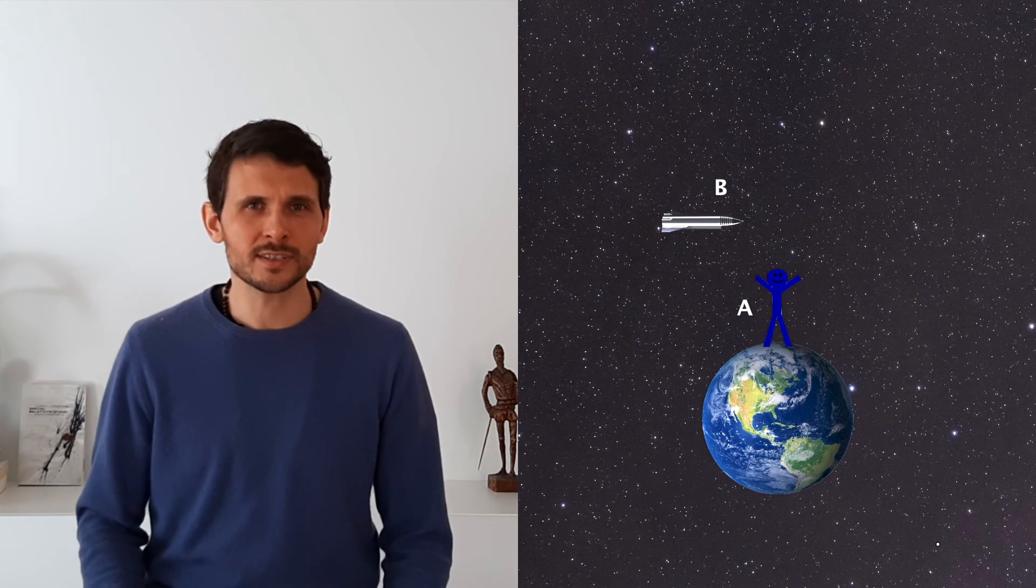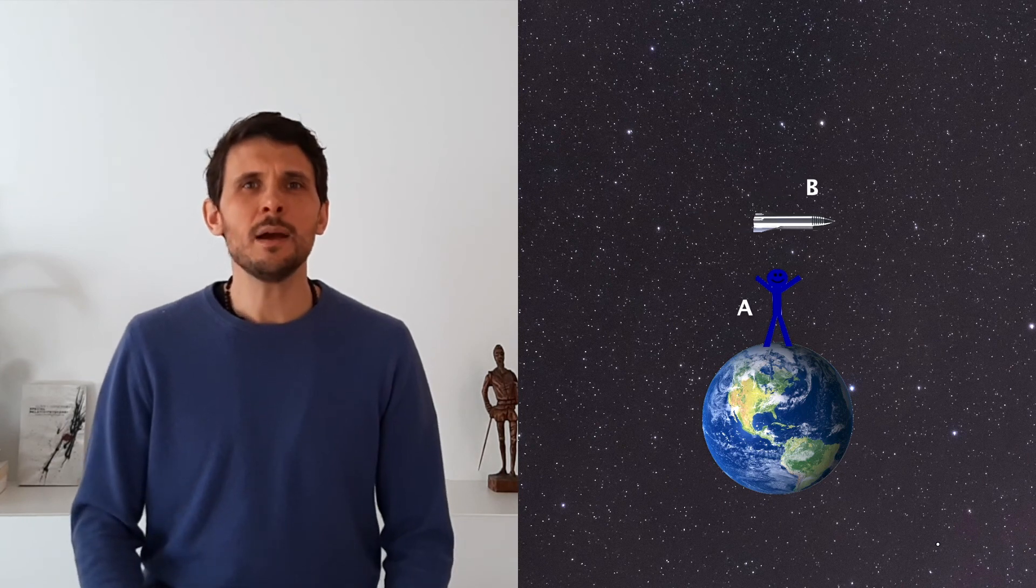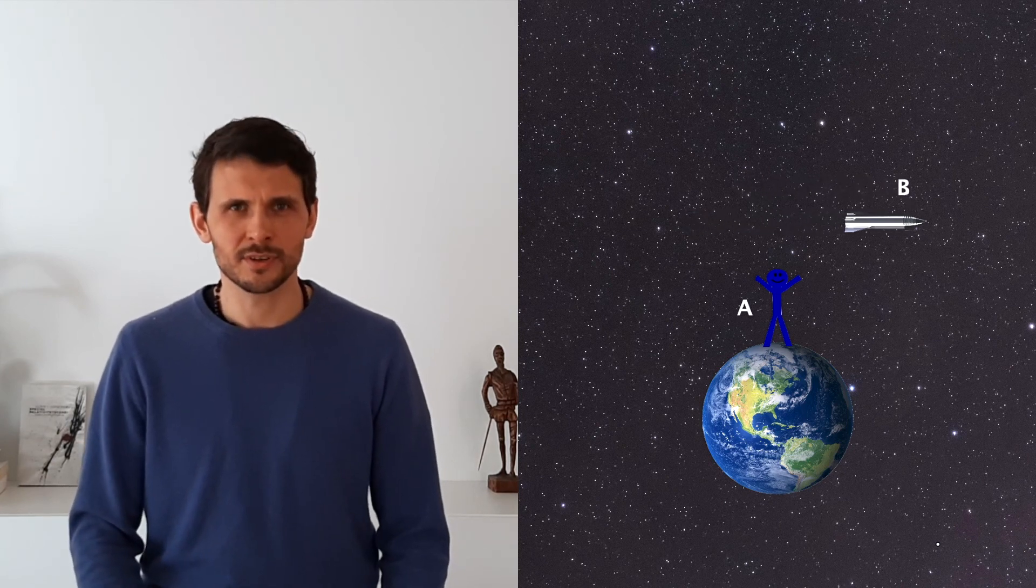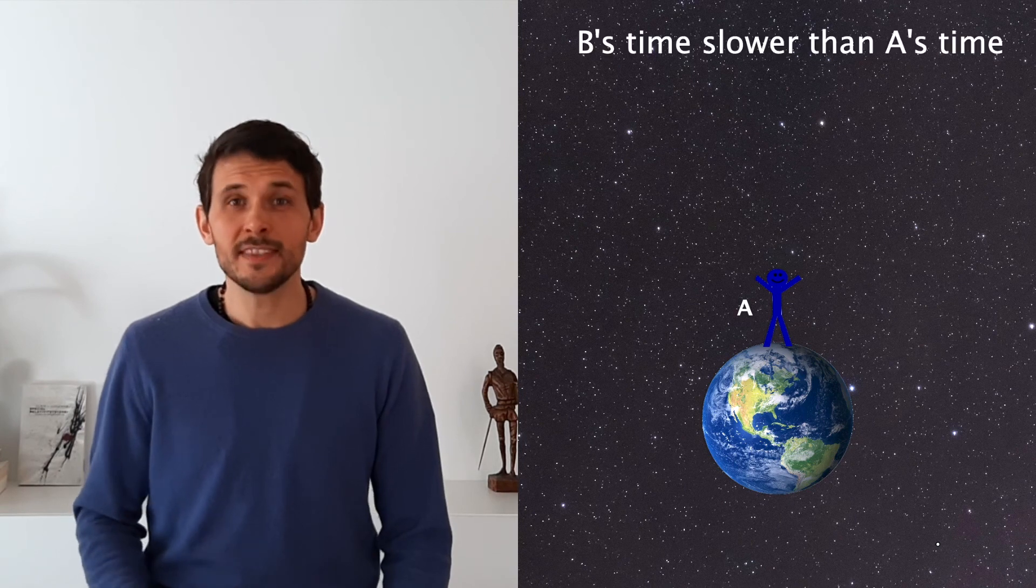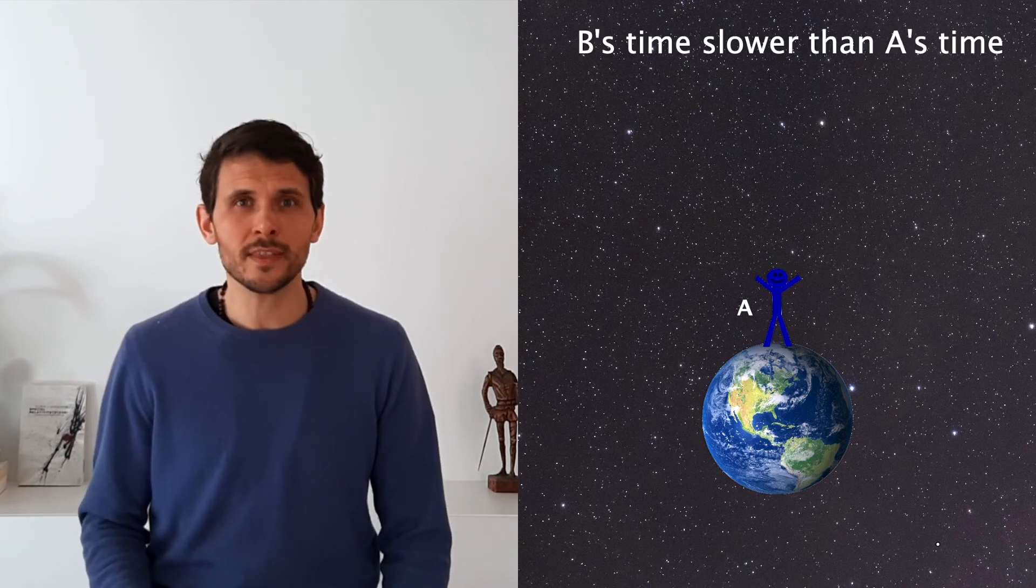Imagine that observer A is at rest on Earth and that observer B blasts by in his starship. Relativistic time dilation tells us that the faster you move, the slower your clock will tick. Since B is in motion, this means that his clock will tick slower than that of A.